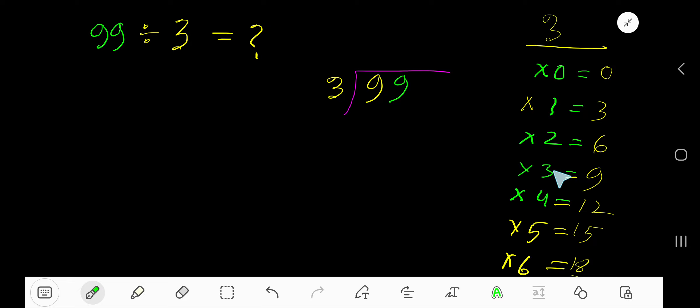3 goes into 9 how many times? 3 goes into 9, 3 times. 3 times 3 is 9. Subtract to get 0. Bring down this 9. 0,9 means 9.